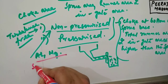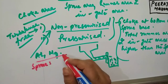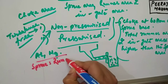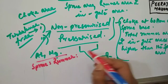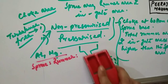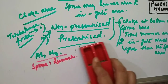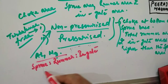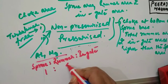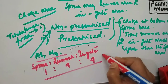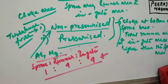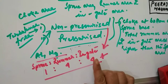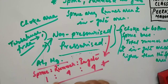So the gating ratio for non-pressurized type of system — sprue is to runner is to ingate — will be 1 is to 4 is to 4. You must take a note or screenshot it. So this is very important for non-pressurized type of gating system. The ratios for sprue, runner as well as ingate will be 1 is to 4 is to 4.